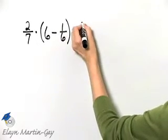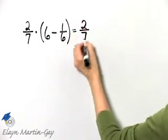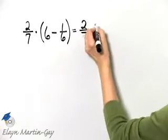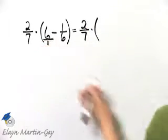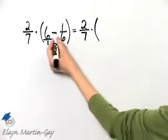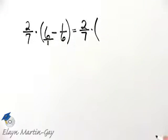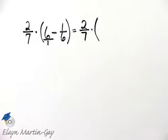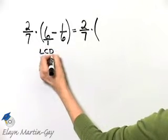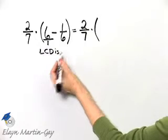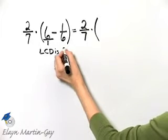So this is two over seven times — I can think of six as six over one — and I am then subtracting fractions. When you subtract fractions, remember you've got to have the same denominators. What's the least common denominator for denominators of one and six? It is six.